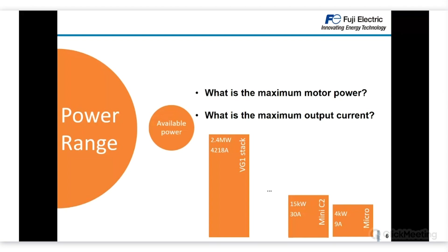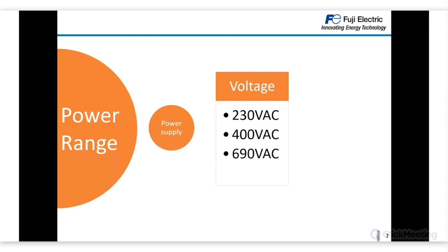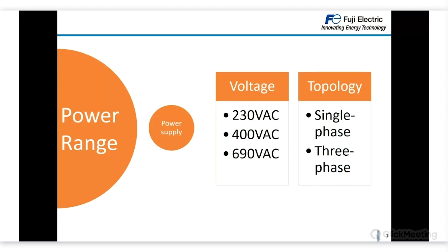Depending on the maximum motor power needed, you select one inverter or another. The power supply is also very important — there are different voltage levels such as 230 V AC, 400 V AC, or 690 V, and different topologies including single-phase or three-phase inverters. For instance, ACE can be single-phase 230 V, three-phase 230 V, or three-phase 400 V, whereas MEGA does not have a single-phase connection option.